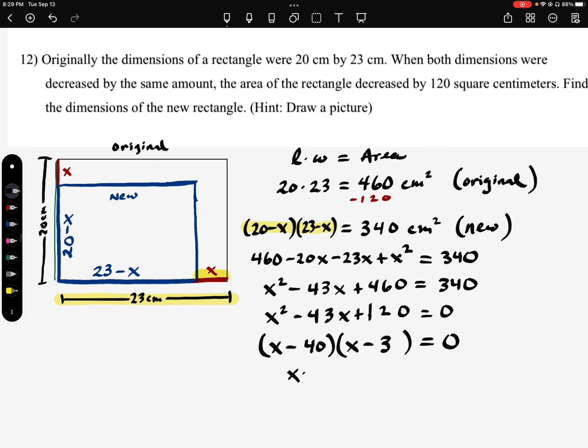We set those equal to 0 and solve them. We're going to get x equals 40 centimeters and x equals 3 centimeters. Then we have to pay attention, though. If we take this 40 and we plug it in, we'd have 23 minus 40, which is going to give us a dimension as being negative 17 centimeters. Well, that doesn't work. That doesn't make any sense. So we're going to throw out 40.